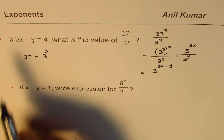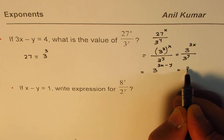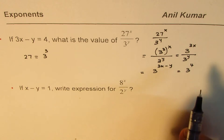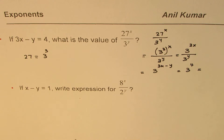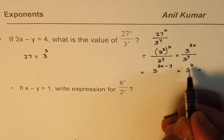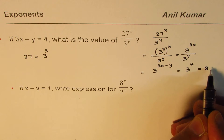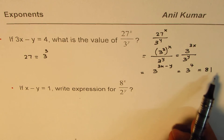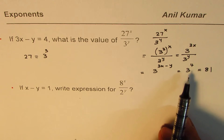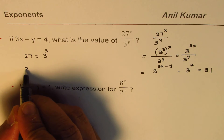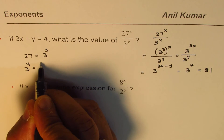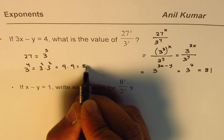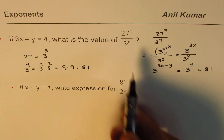We are given that 3x minus y equals 4, so I can write this as 3 to the power of 4. We need to find its value. You can always use your calculator — 3 squared is 9, and the square of 9 is 81. Without a calculator, think of it as 3 to the power of 4 equals 3 squared times 3 squared, which is 9 times 9, equaling 81. So the answer to the first question is 81.